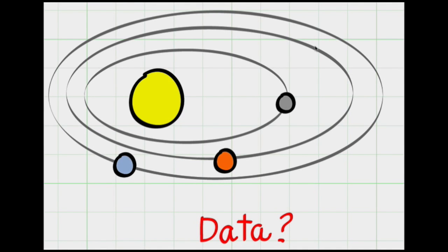Back in Sir Isaac Newton's day, there was a big problem. There was data describing the motion of planets, but no one had been able to figure out the patterns in the data.